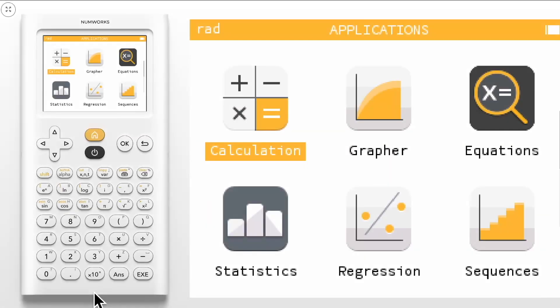Today we are going to learn how to generate random numbers on the NumWorks graphing calculator. To begin, open the calculation application.